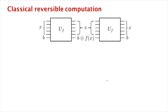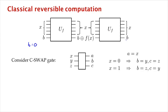So clearly implementing a function in a straightforward way would not be reversible. What we want to do is feed in the input x as well as an answer bit b, initially set to zero, where the answer will be stored. We want our quantum circuit to output x unchanged, plus the answer. What it does is XOR b with f of x — it flips b if and only if f of x equals one. Then applying U_f again would undo everything and restore the state.